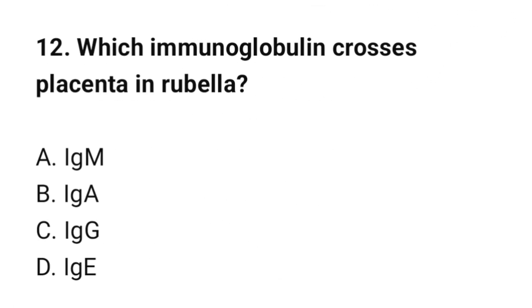Question number 12: Which immunoglobulin crosses the placenta in rubella? The correct option is C: IgG.